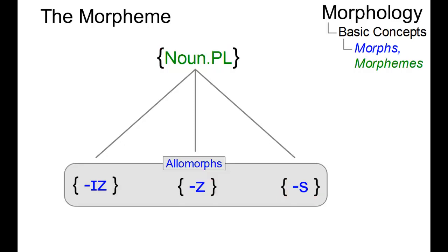For example, we can use the dot notation used in language typology and label it noun plural. Or we can simply select the allomorph that occurs most frequently as the label of the morpheme.